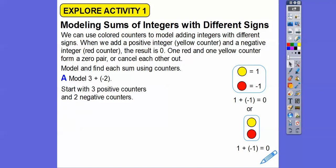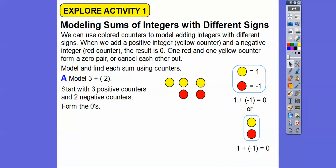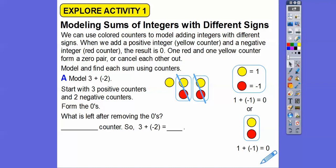Let's model and find each sum. We're going to start with 3 positive counters and 2 negative counters — 3 yellows on top and 2 reds on the bottom. Then we form the zero pairs. Here's a zero, here's another zero. If we cross those out, what are we left with? We're left with one positive counter. So 3 plus negative 2 equals 1. Pretty slick!